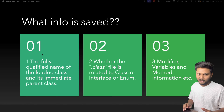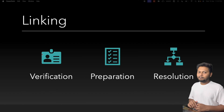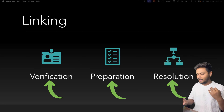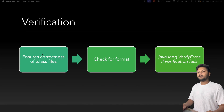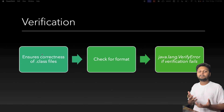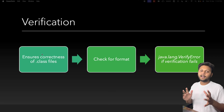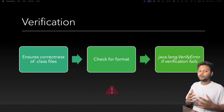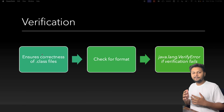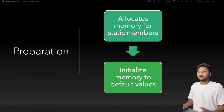Next is linking, which performs three tasks: verification, preparation, and resolution. Verification ensures the correctness of the .class file — it verifies the format and checks that everything is correct. If there is an issue with verification, it will throw a VerifyError, which comes from the java.lang package.